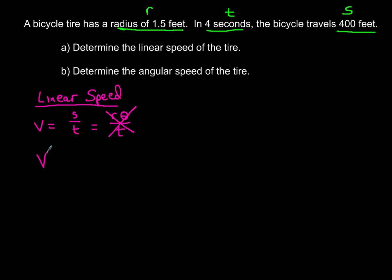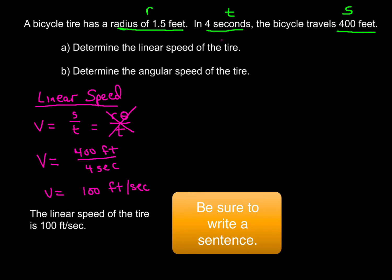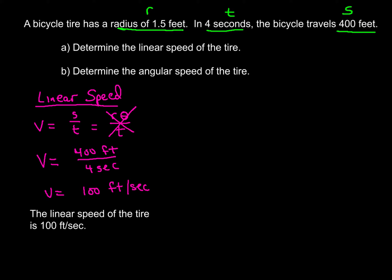So basically, this is just a simple substitution from this point on. So s, we're going to put in our 400, and make sure you include the units, that's feet, and then our time is four seconds. When you reduce everything, you get a velocity of 100 feet per second. And of course, we'll go ahead and write a sentence to wrap this up. The linear speed of the tire is 100 feet per second.